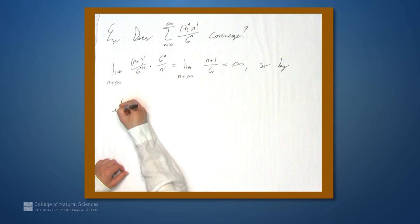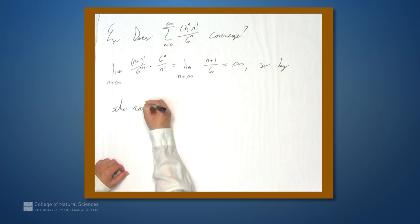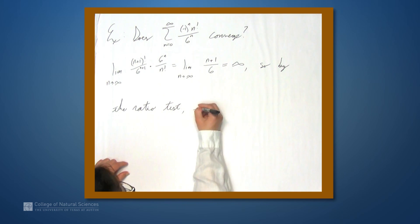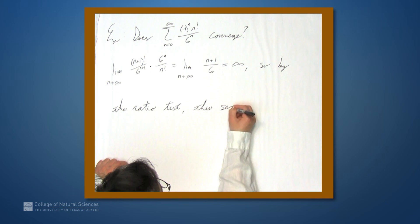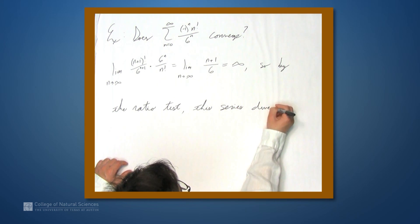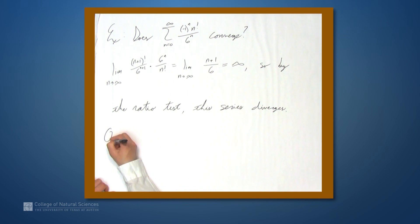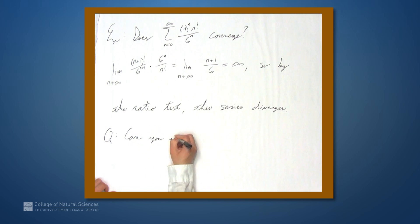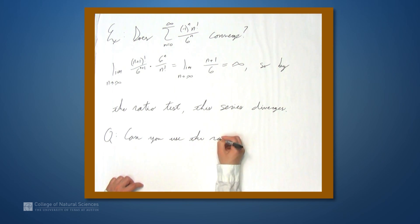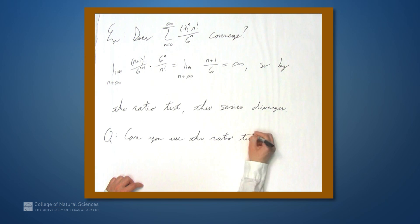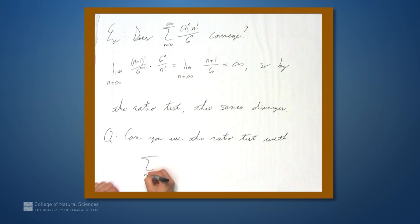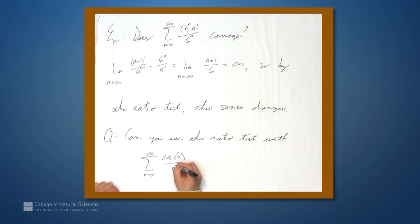So by the ratio test, this series diverges. I'll leave you with the question: can you use the ratio test with the series from n equals 0 to infinity of cosine of n over n squared?